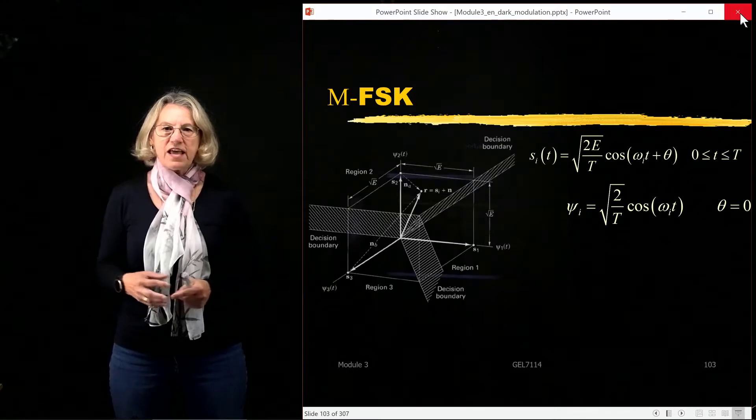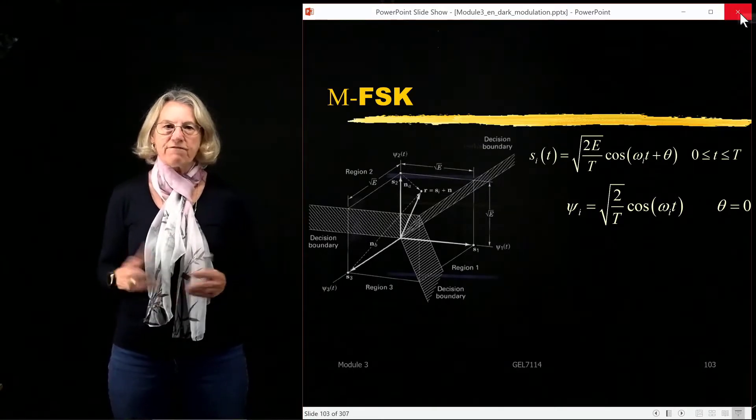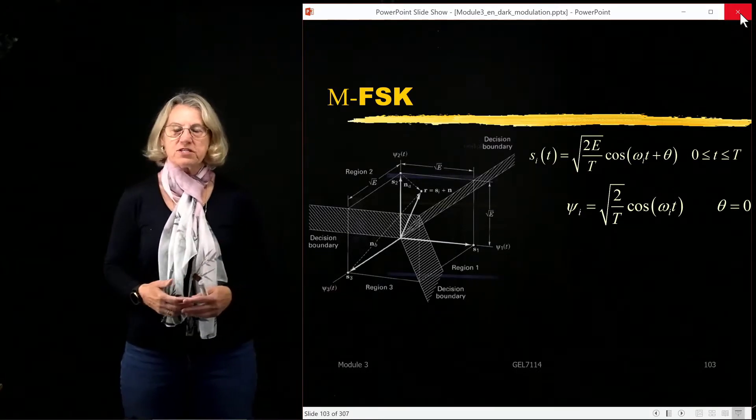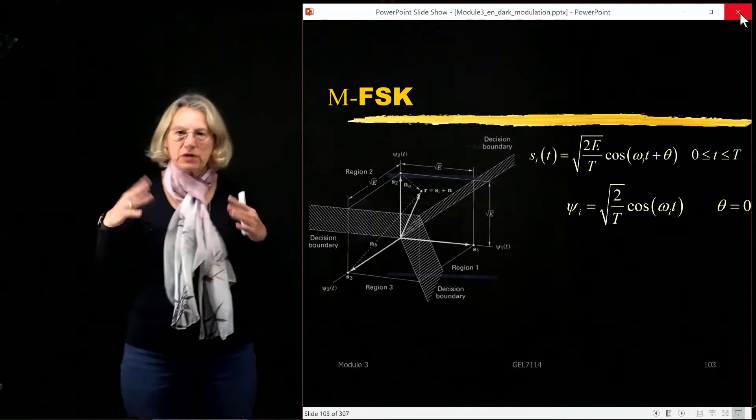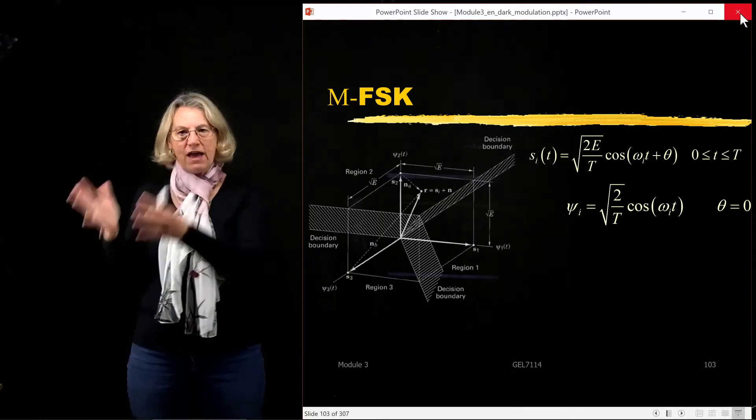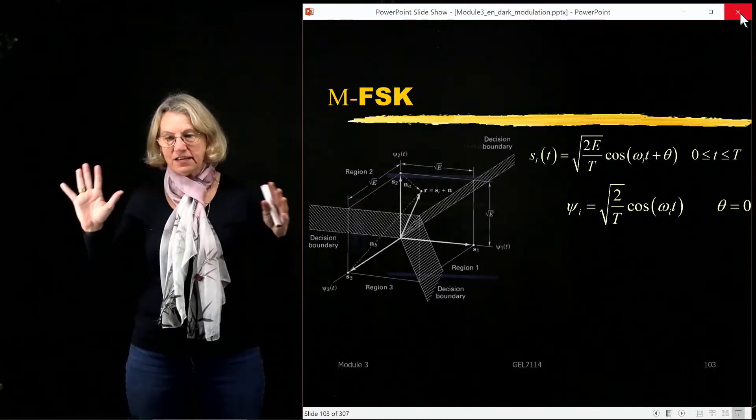So this is a representation of the signal space for FSK. Of course our figure here is in three dimensions because it's very hard for us to imagine an M-dimensional space. But recall that FSK, if you have M symbols, there is an M-dimensional space in the signal space.